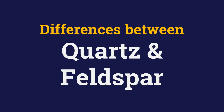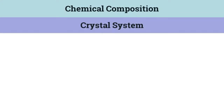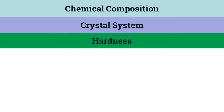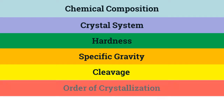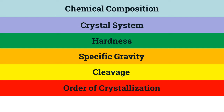Finally, let us look at the various differences between quartz and Feldspar. Quartz is composed only of silicon oxide whereas Feldspar also has alkali elements. Quartz crystallizes in the hexagonal system but Feldspar crystallizes in monoclinic and triclinic systems. The hardness and specific gravity of Feldspar are less than quartz. Quartz has no cleavage whereas Feldspar has two sets of cleavage. Feldspar crystallizes before quartz, and finally, quartz is much more resistant to weathering than Feldspar.